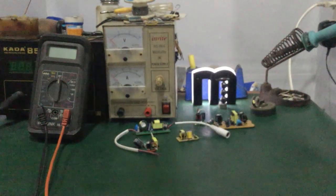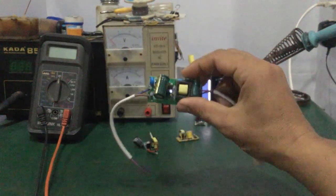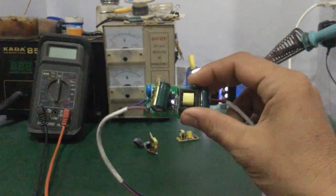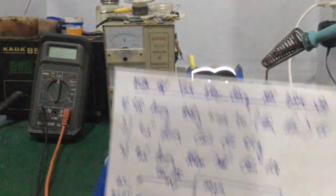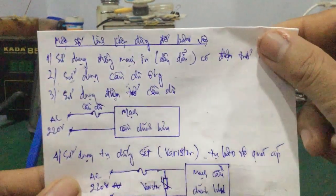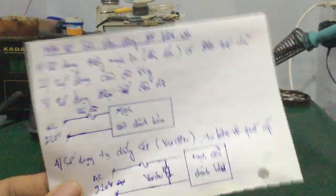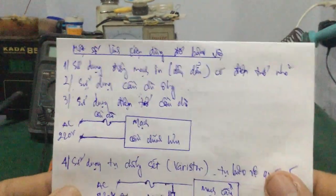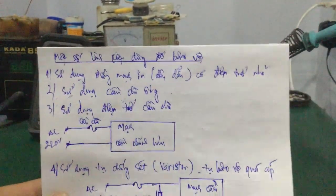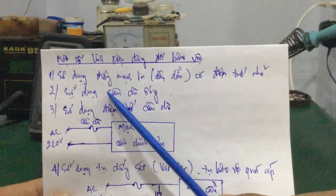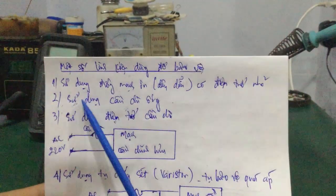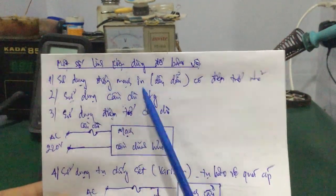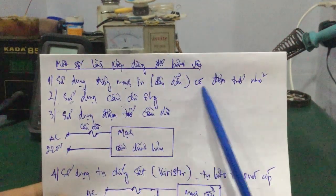Tiếp theo mình sẽ nói về cái bo nguồn LED driver, vào những phần tử bên trong để mà bảo vệ bo mạch này. Thứ nhất, các bạn hay thường thấy đối với bo nguồn LED driver phổ thông, sử dụng là đường mạch in hoặc là dây dẫn nha.